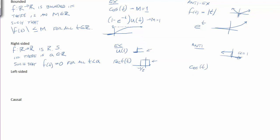And another anti-example is cosine of t. And this guy is, of course, neither left nor right-sided.